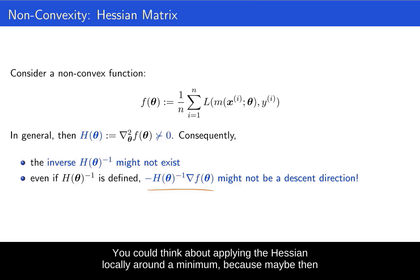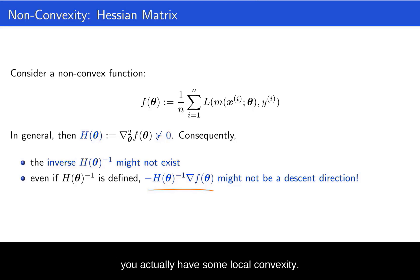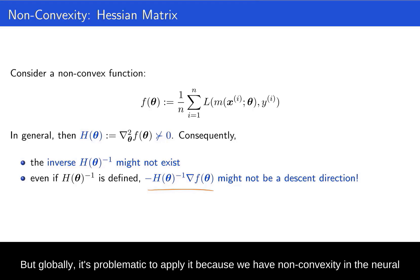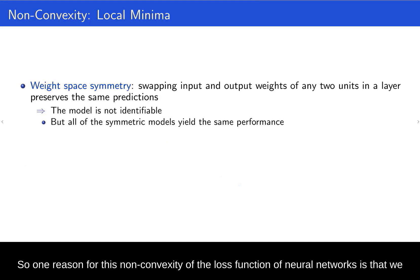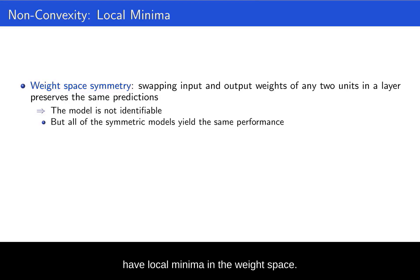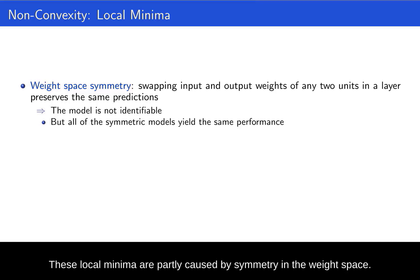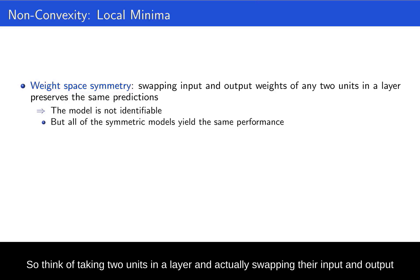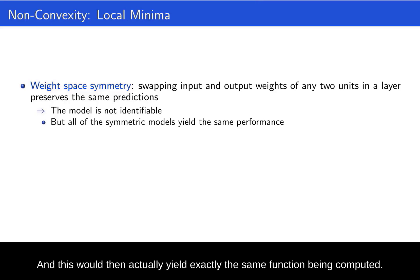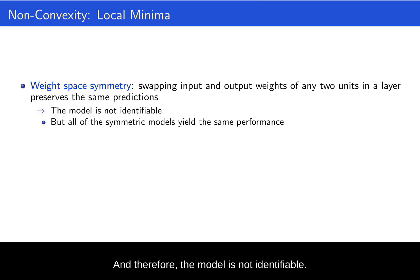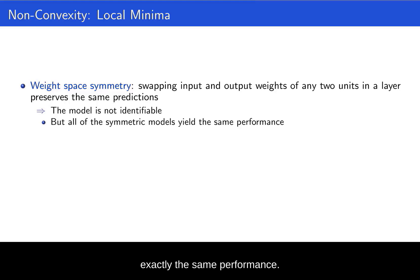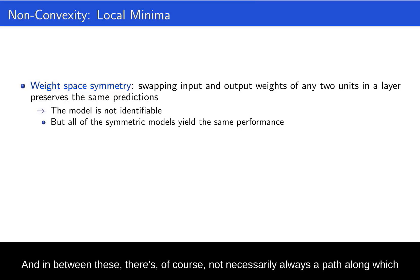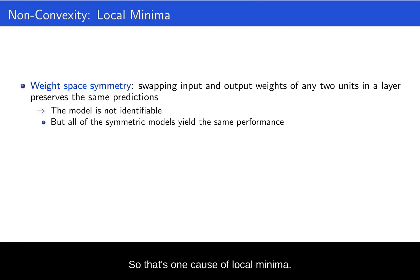You could think about applying the Hessian locally around a minimum, because maybe then you actually have some local convexity. But globally, it's problematic because we have non-convexity in the neural network. One reason for this non-convexity is that we have local minima in the weight space. These local minima are partly caused by symmetry in the weight space — think of taking two units in a layer and swapping their input and output weights around, which would yield exactly the same function being computed. Therefore the model is not identifiable, and each minimum has an exponential number of copies of weight vectors that yield exactly the same performance.